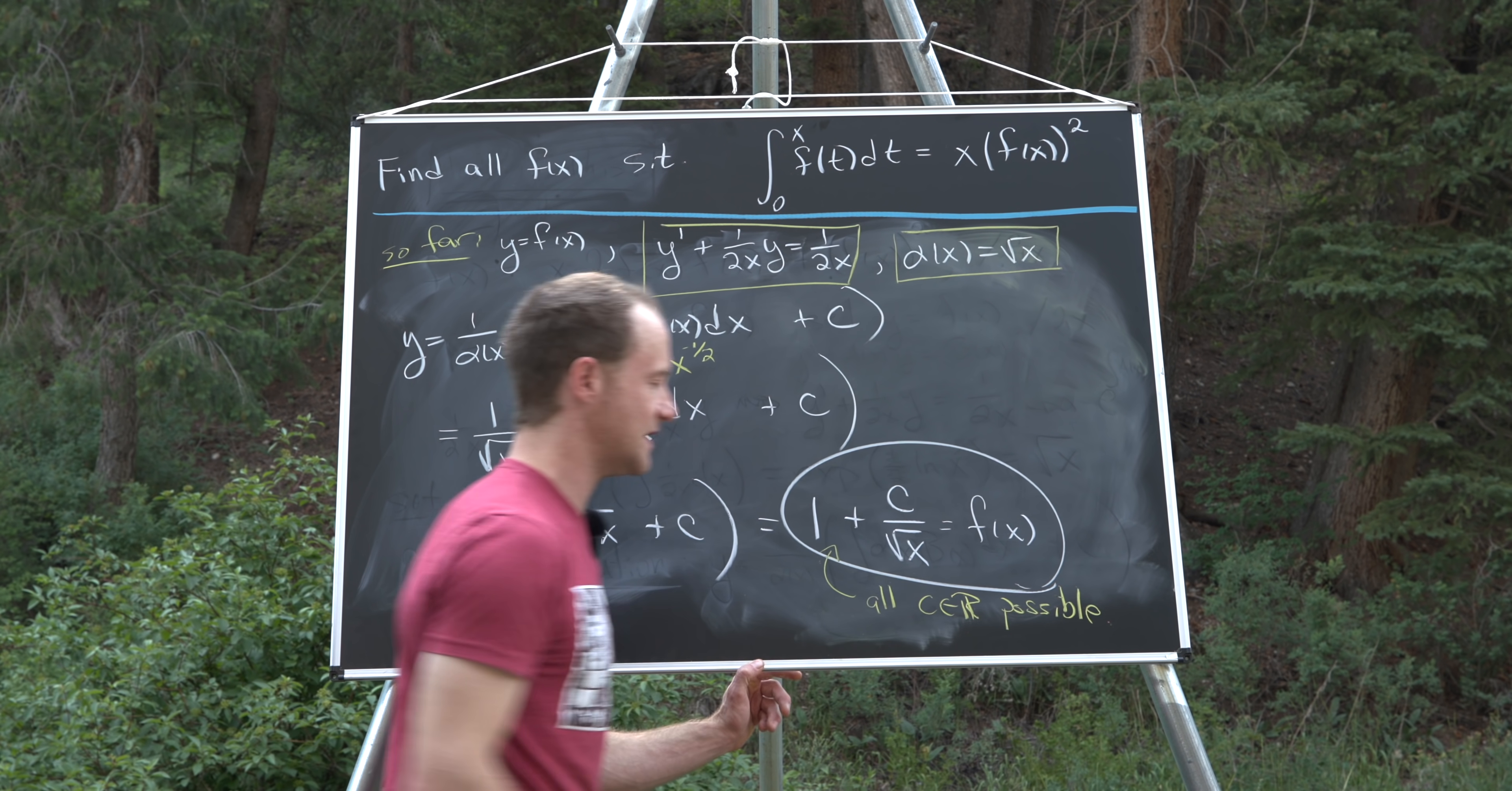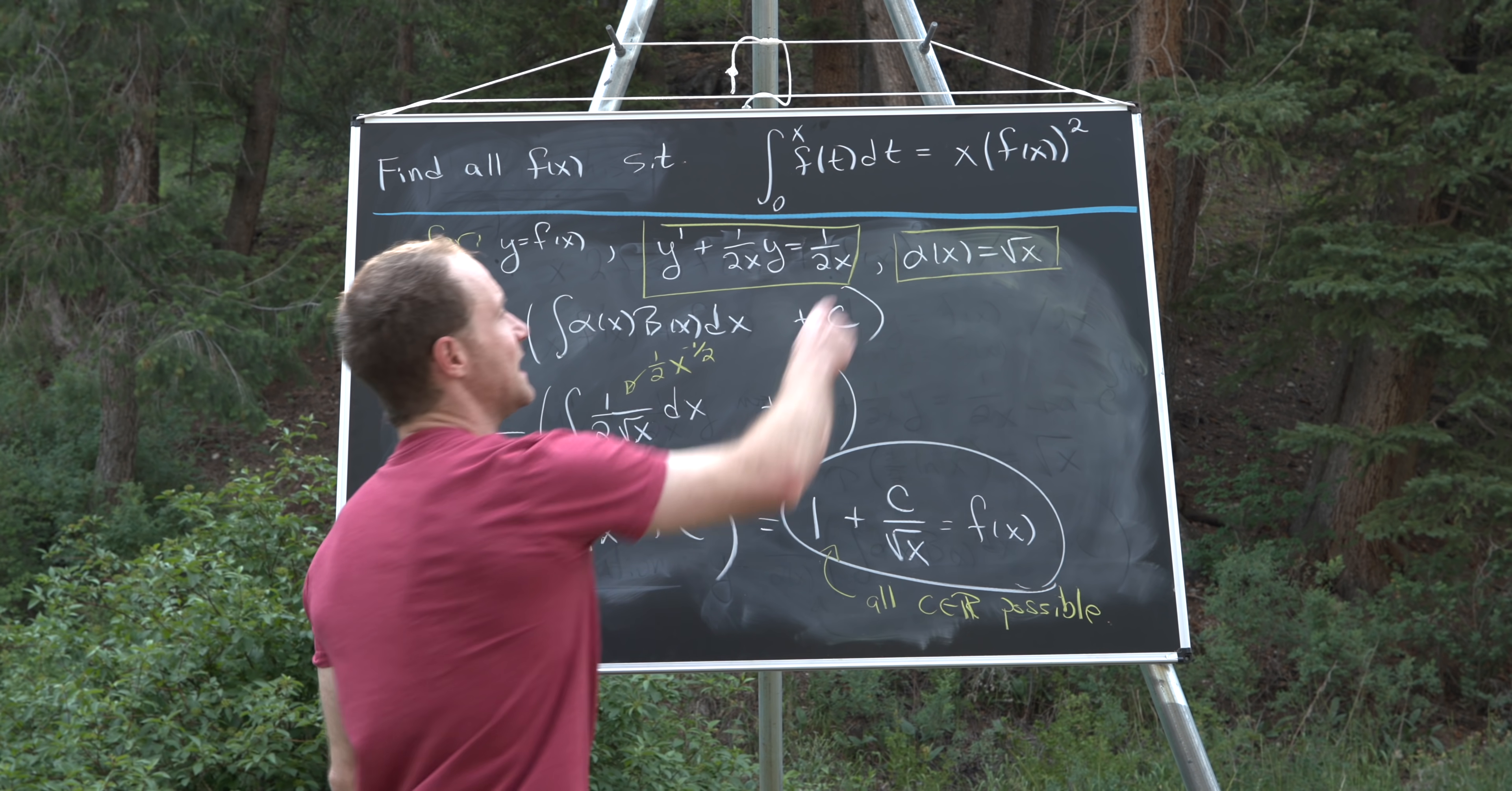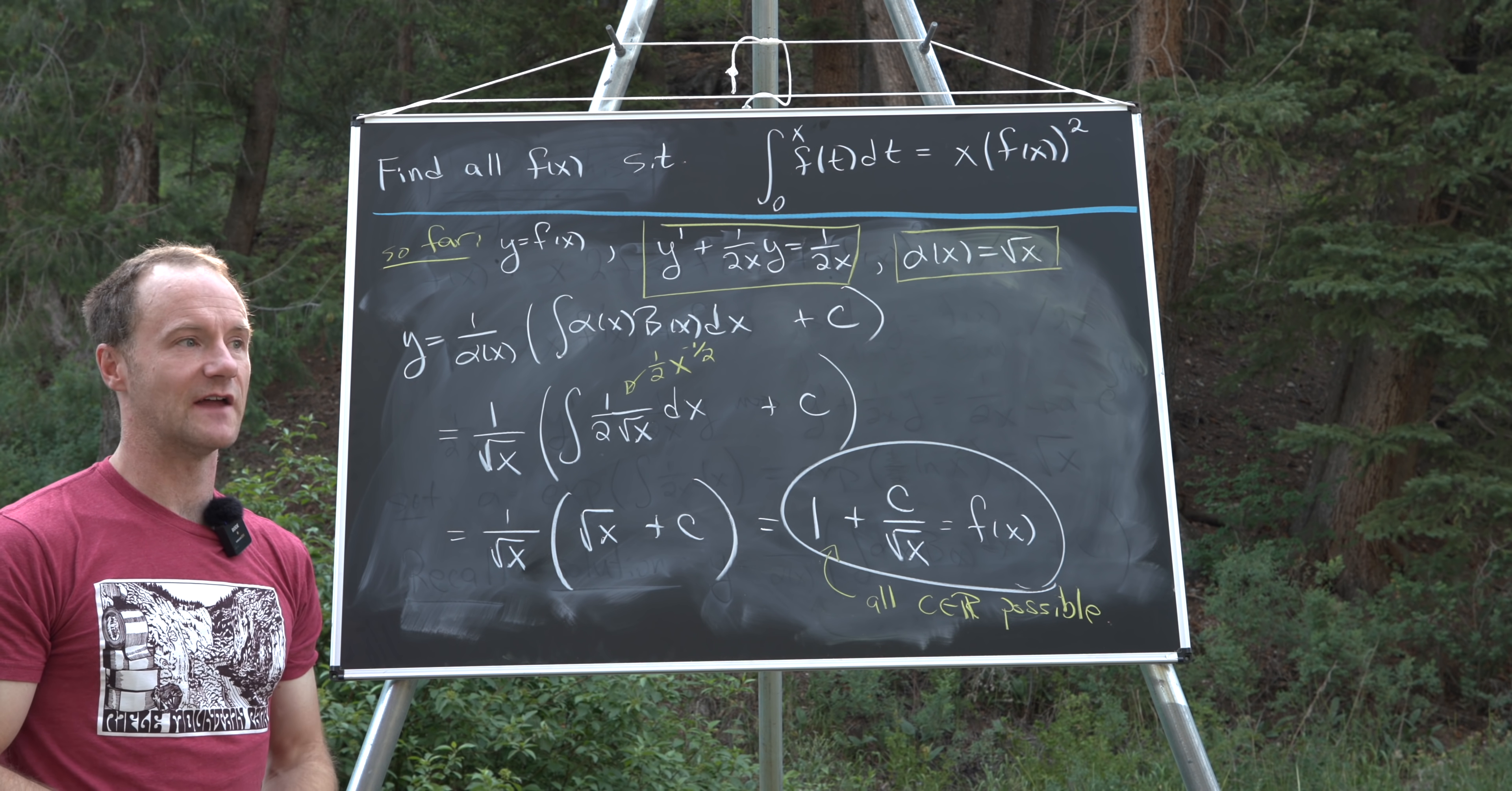So maybe, maybe not. Notice if we set c equals zero, that's possible because we get the integral from zero to one of one, which is just x equals x times one squared. That clearly works. But do all other values of c work? Well, I'll let you guys check that for yourselves. And that's a good place to stop.